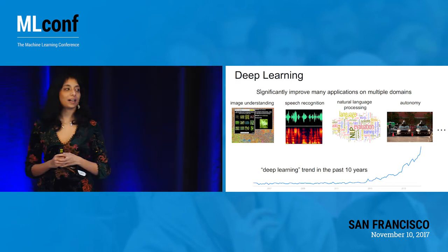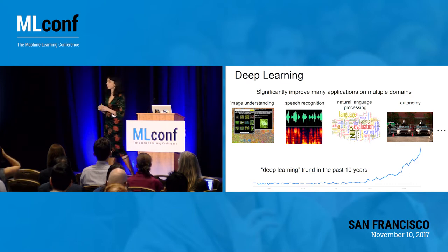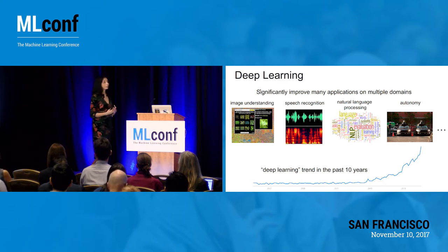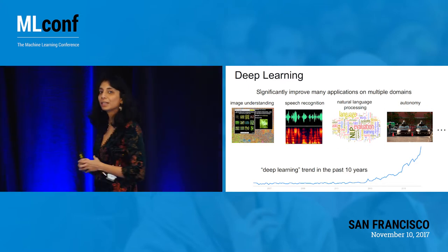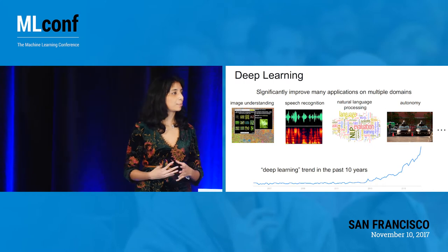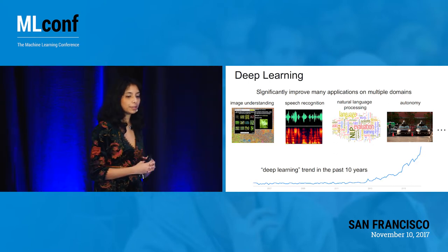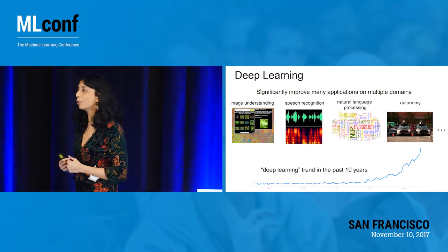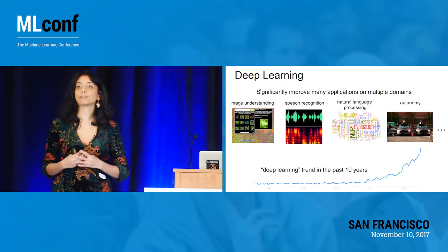We now have deep learning systems deployed almost universally, including at Amazon Web Services where we have the recognition API for computer vision. We've also moved to a number of other domains: speech recognition has gotten an enormous boost from deep learning. Natural language processing is a more challenging task, especially because getting annotated data is expensive, but we are making progress every day. Autonomous driving and any application involving deep learning in a control loop for decision-making is one of the most challenging tasks, and we are making rapid progress in deep RL and safe RL.